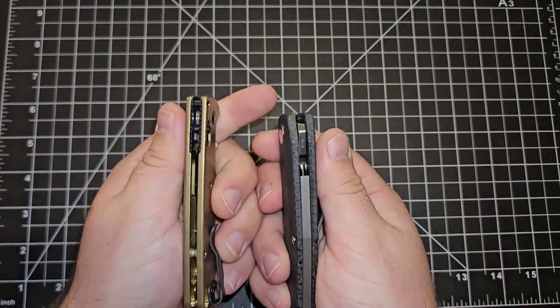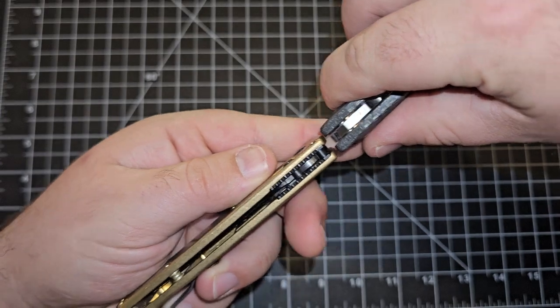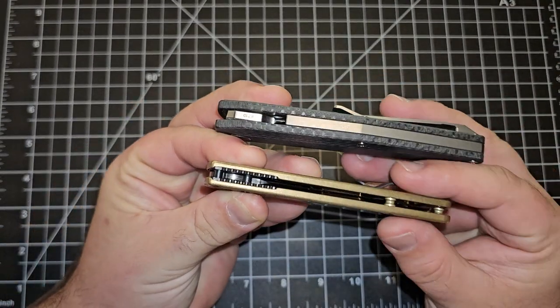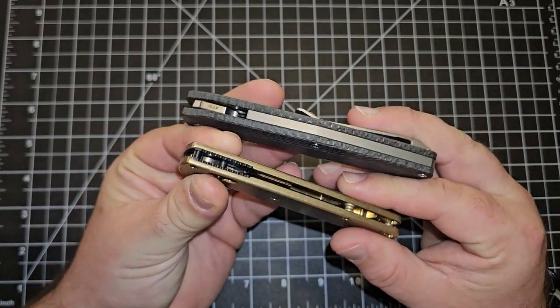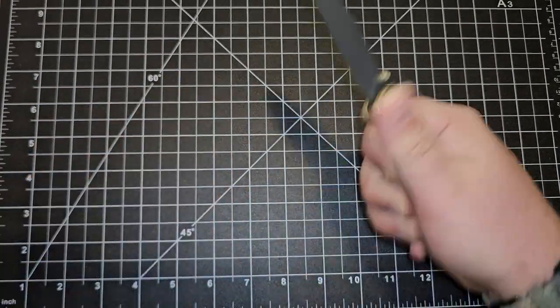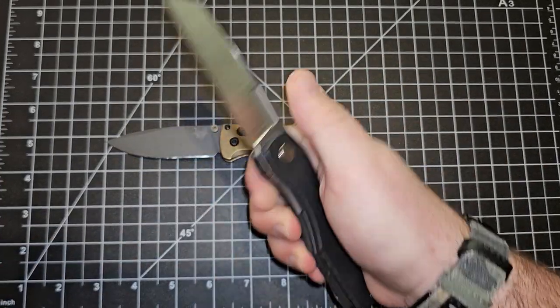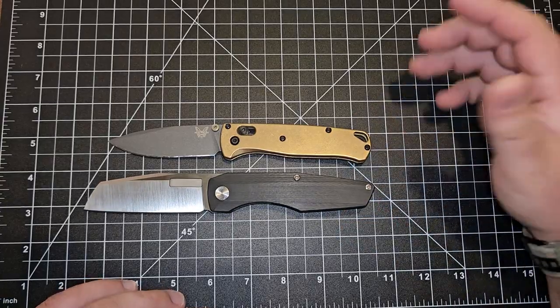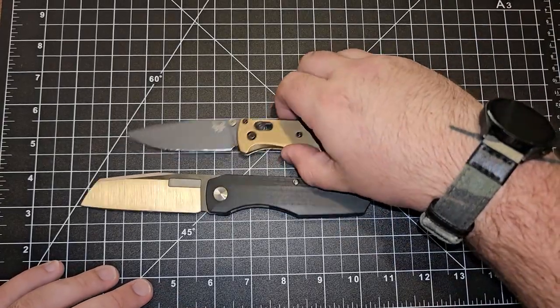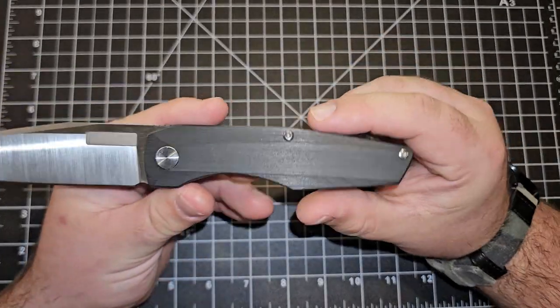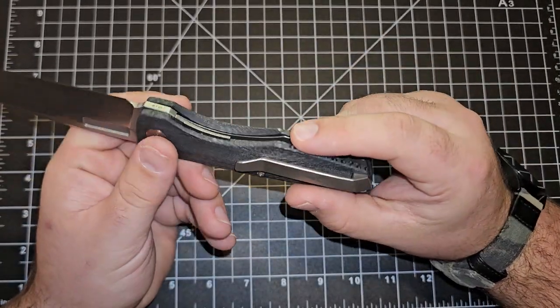Now this is them closed and you can kind of see a little bit of the size comparison there. So it's quite a bit thicker. You guys know I don't review a lot of folding knives. I am a fixed blade channel and I mostly do hard use fixed blades that I enjoy.